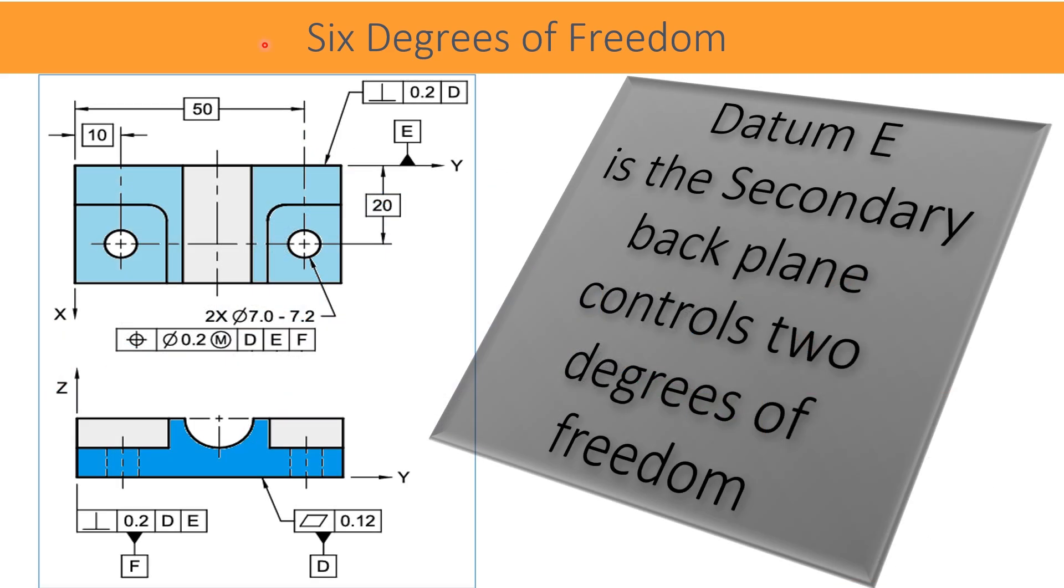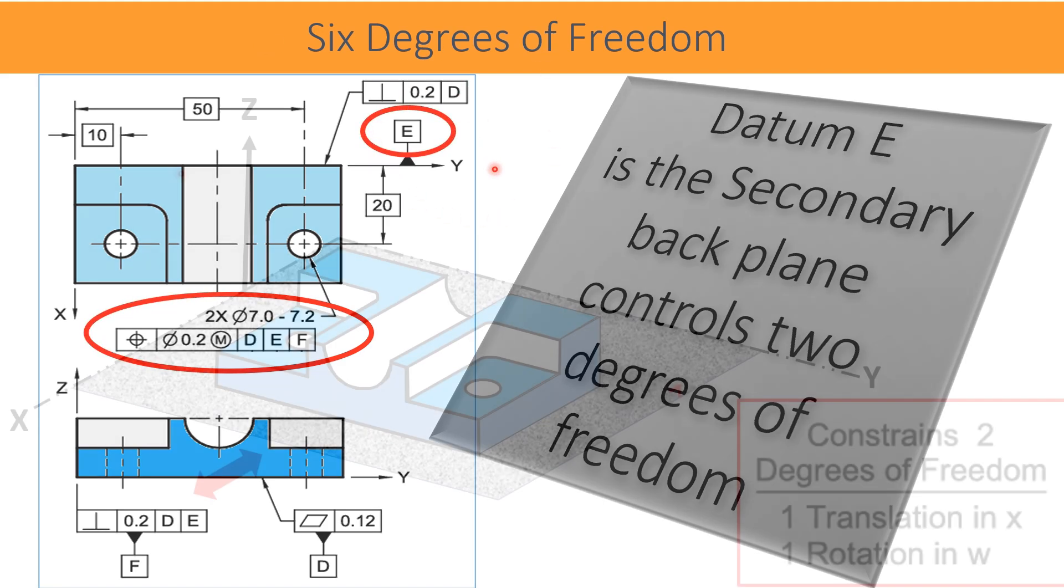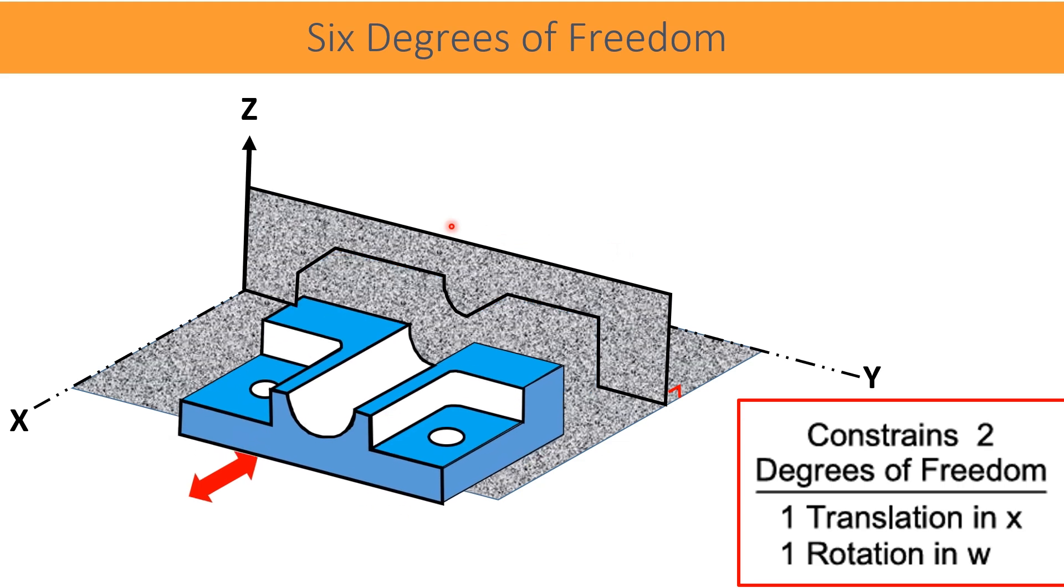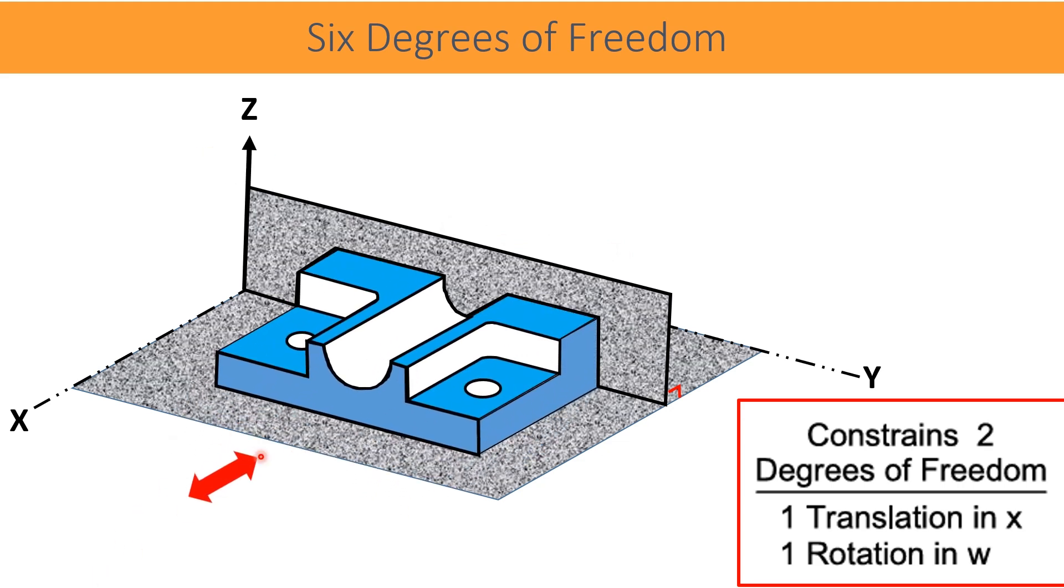Datum E is a rear side plane which is perpendicular to primary datum D. The secondary datum E constrained two degrees of freedom: one in translation and one in rotation.